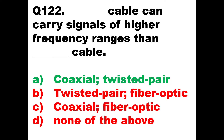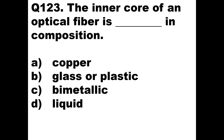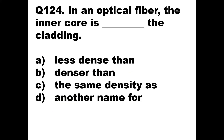Question 123: The inner core of an optical fiber is dash in composition. The inner core of an optical fiber can be made up of glass or plastic. The answer is direct — it can be made of glass or plastic. That is the inner core through which light travels using the principle of total internal reflection.